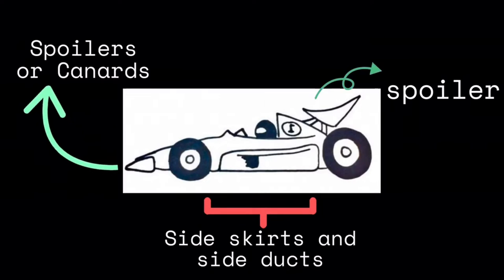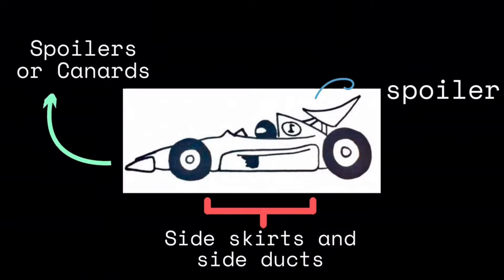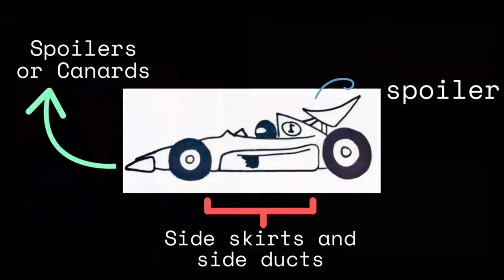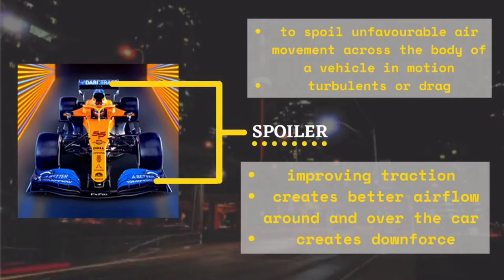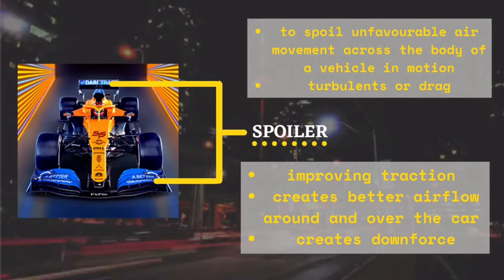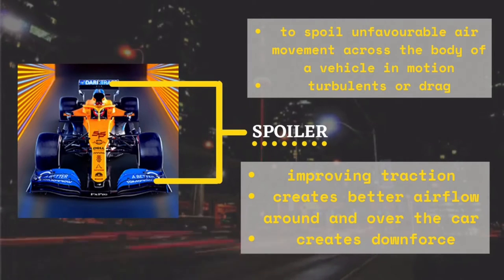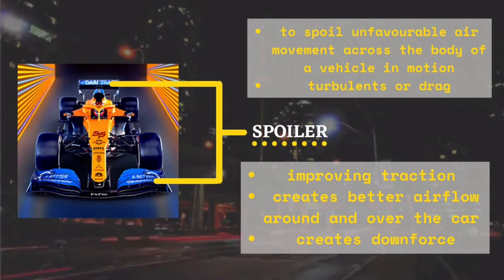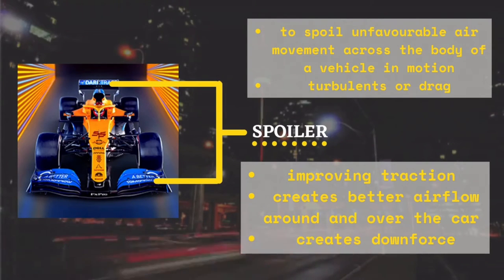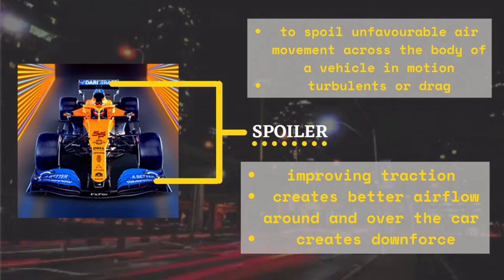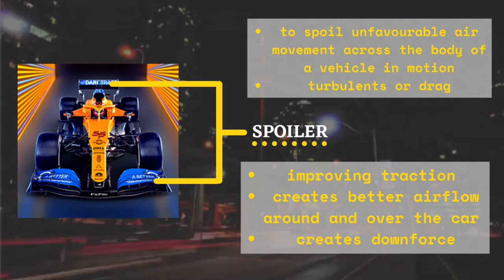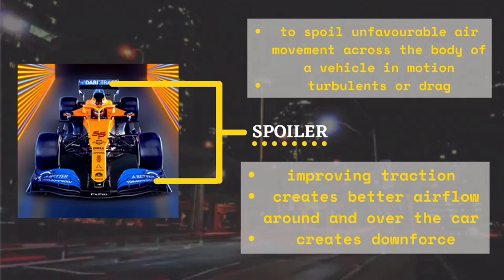These sections include spoilers or canards at the front, side skirts and side ducts at the middle, and a spoiler at the rear end. Cars will have spoilers either on the front or at the back. The sloped front end and rear spoilers are specially designed to spoil unfavorable air movement across the body of a vehicle in motion, usually described as turbulence or drag.